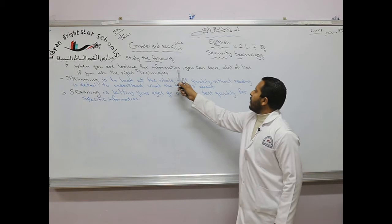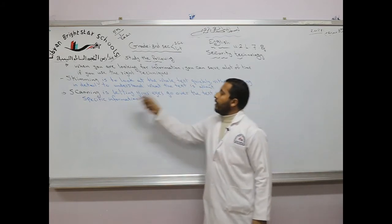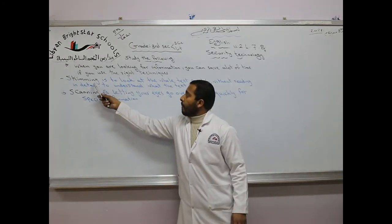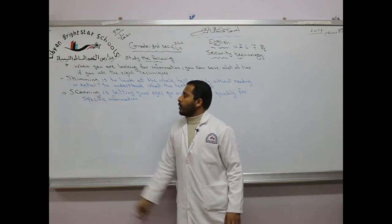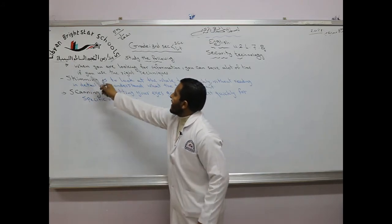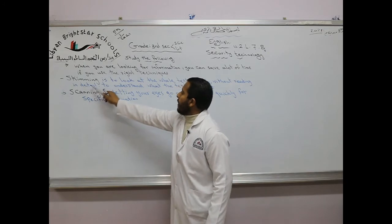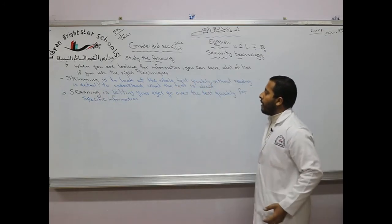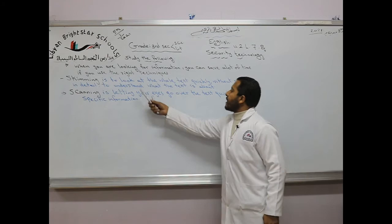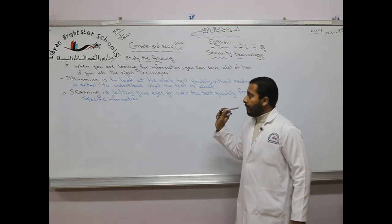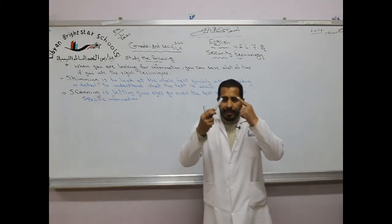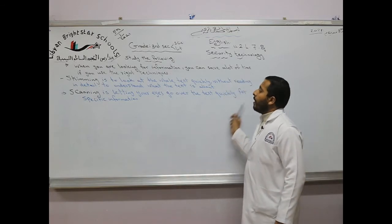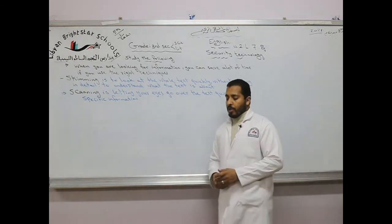So when you are looking for information, you can save a lot of time if you use the right techniques. The two common techniques are skimming and scanning. Skimming is to look at the whole text quickly without reading in detail to understand what the text is about. But scanning is letting your eyes go over the text quickly for specific information.